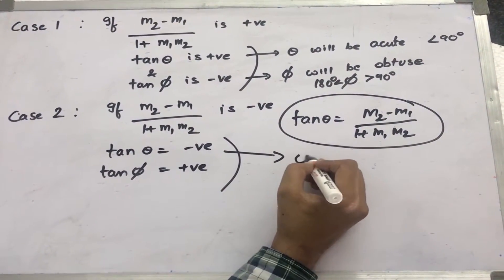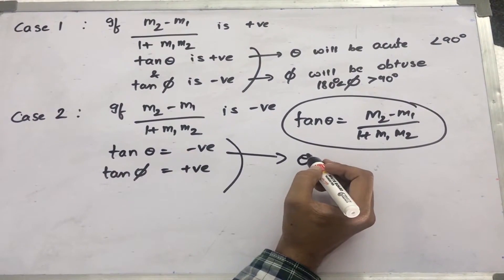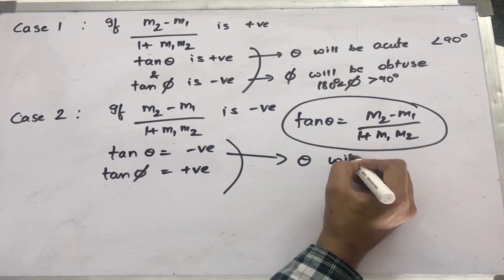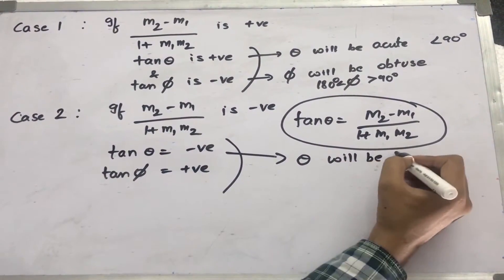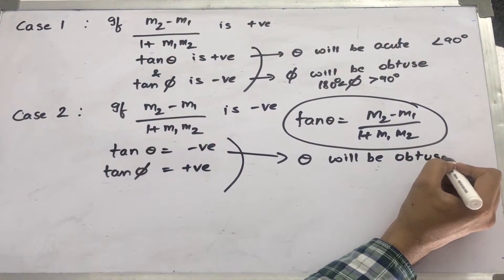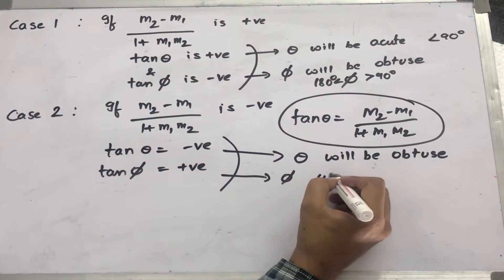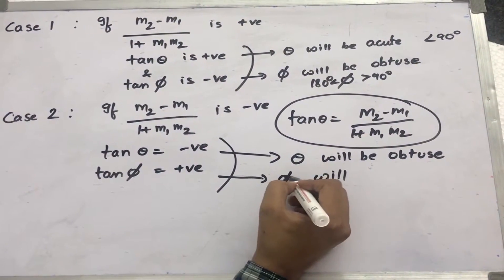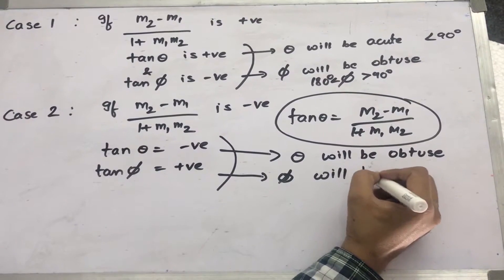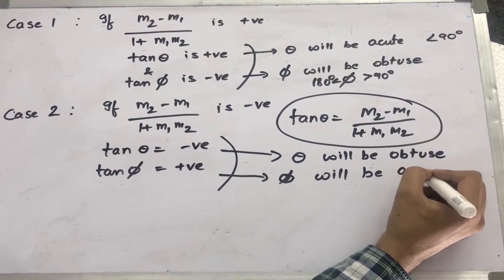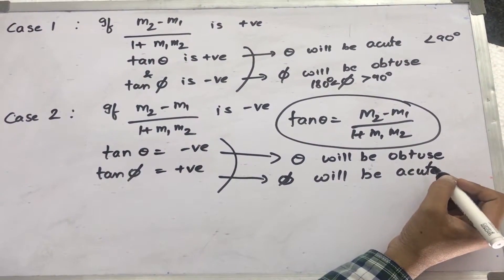Now, if tan theta is negative, what can we say? Theta will be obtuse, and phi will be acute.